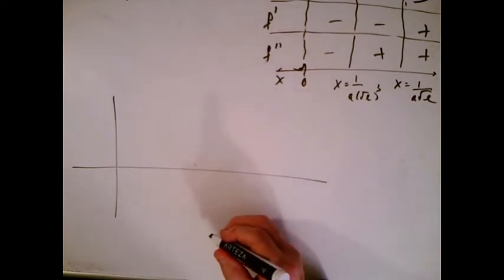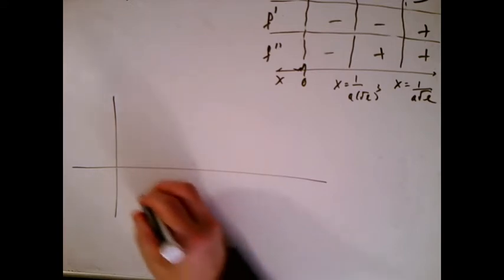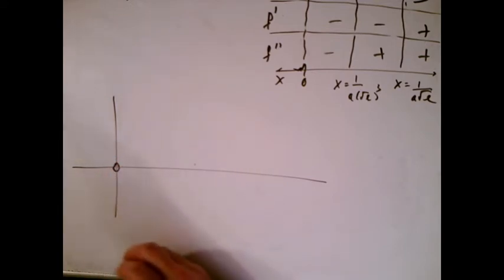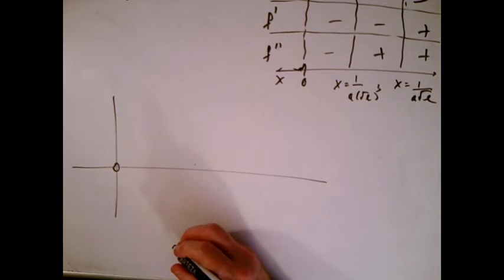When we took the limit of the left-hand behavior, what we got was that there was a hole at height zero, because that was actually the limit. So we go like that. It feels kind of weird, but that's what we're going to do.